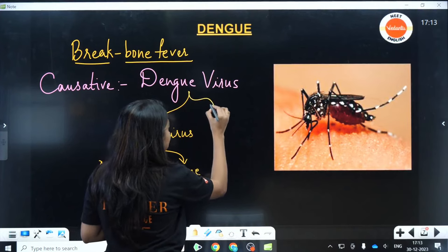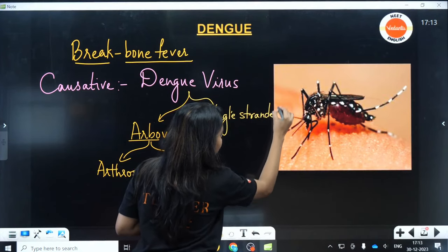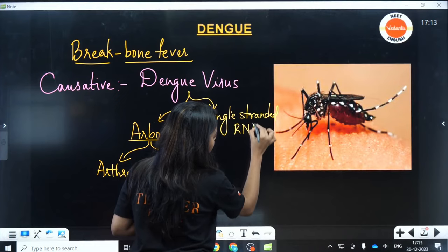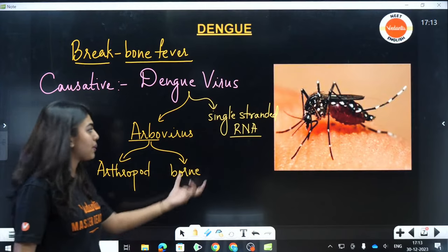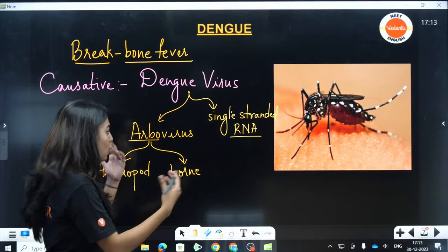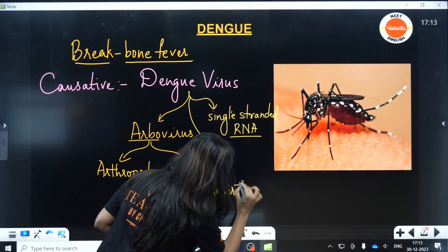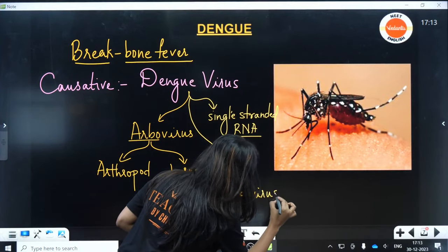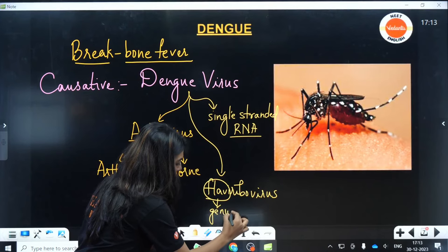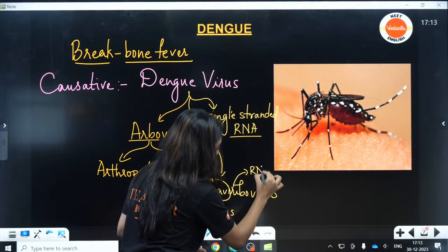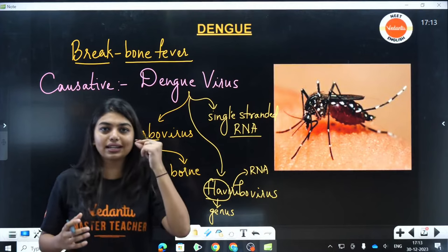This virus is a single-stranded RNA virus. Like we have DNA, the genome present here is RNA — it is single-stranded RNA. Because of this, we can also call this variety Flaviribovirus, where 'ribo' means RNA. This is the genus name. So this is all about the causative agent — the virus that causes Dengue belongs to a family called Arbovirus, which means an arthropod must be present for this virus to be transmitted.